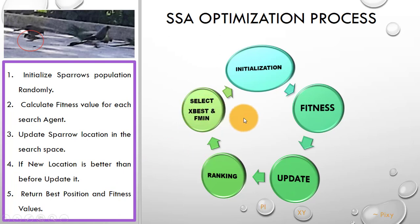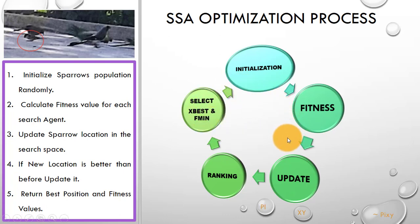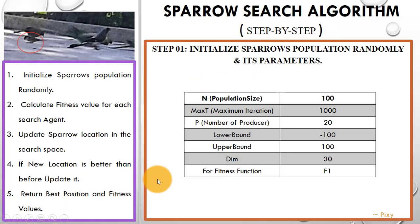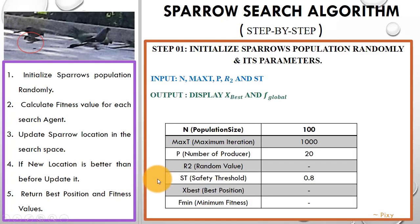We will repeat this loop until we meet the stopping criteria, and in the end we will return the best position and fitness value. In step 1, we will initialize the population randomly, and all the important parameters required as input are here.